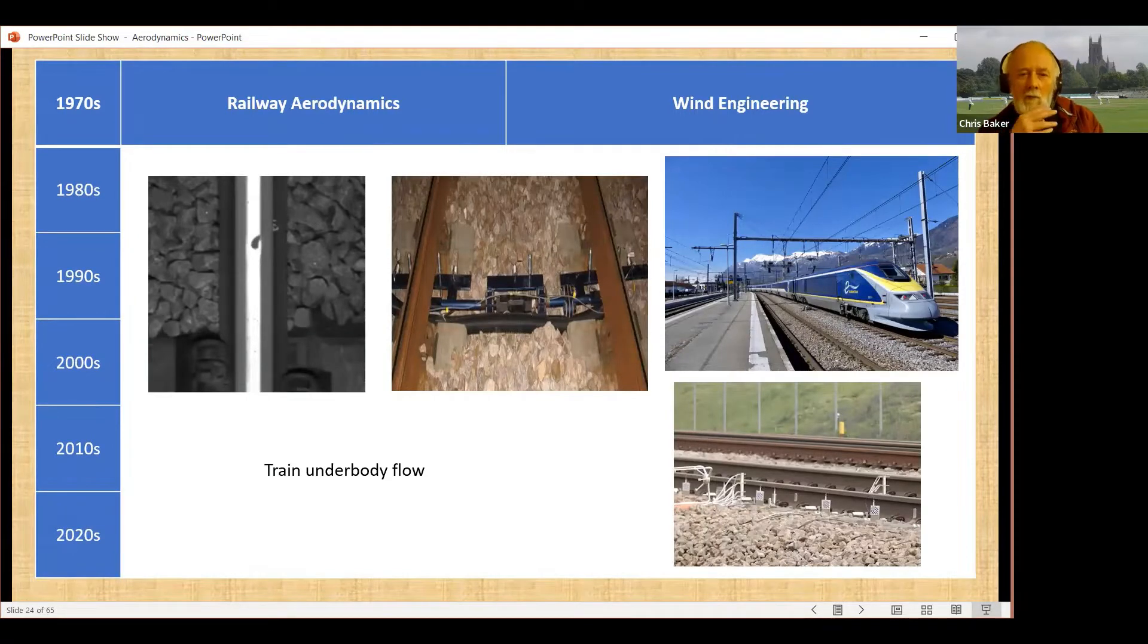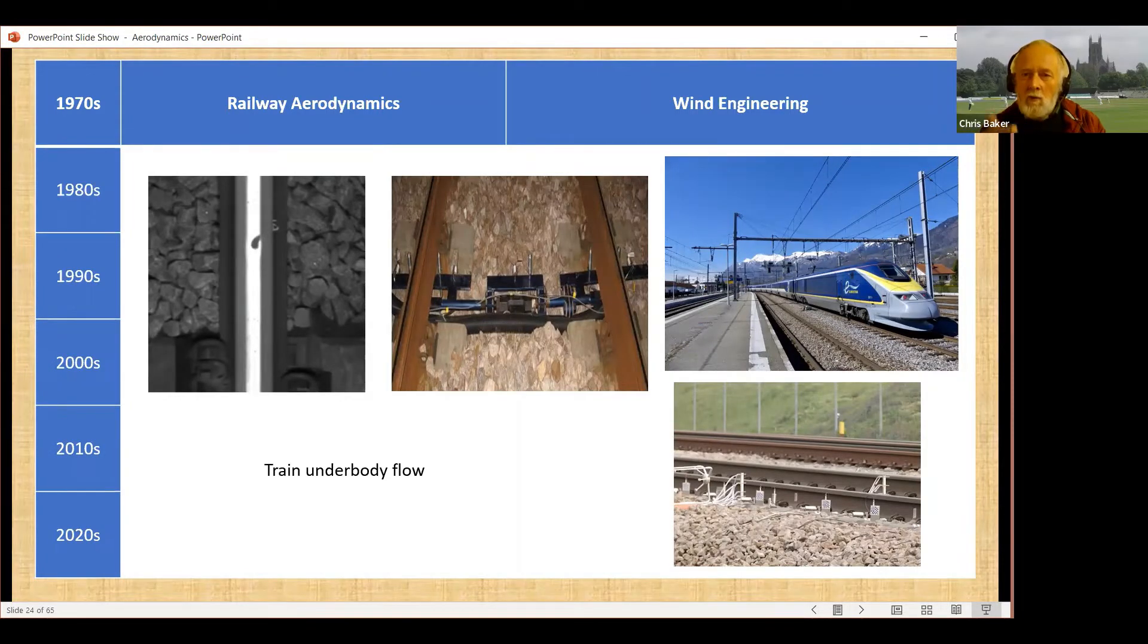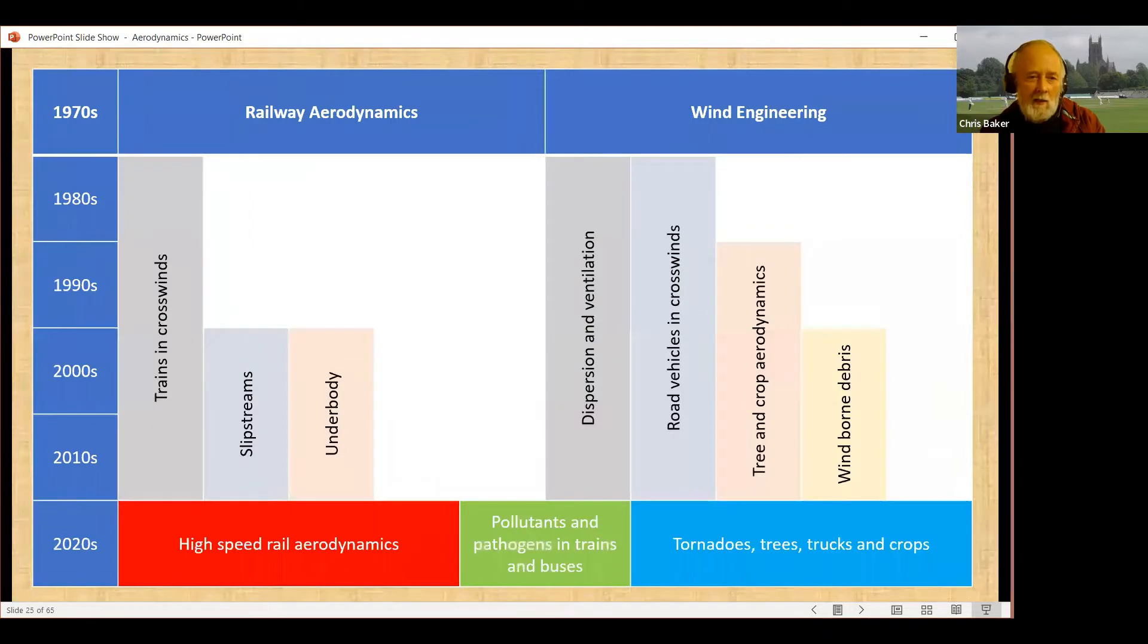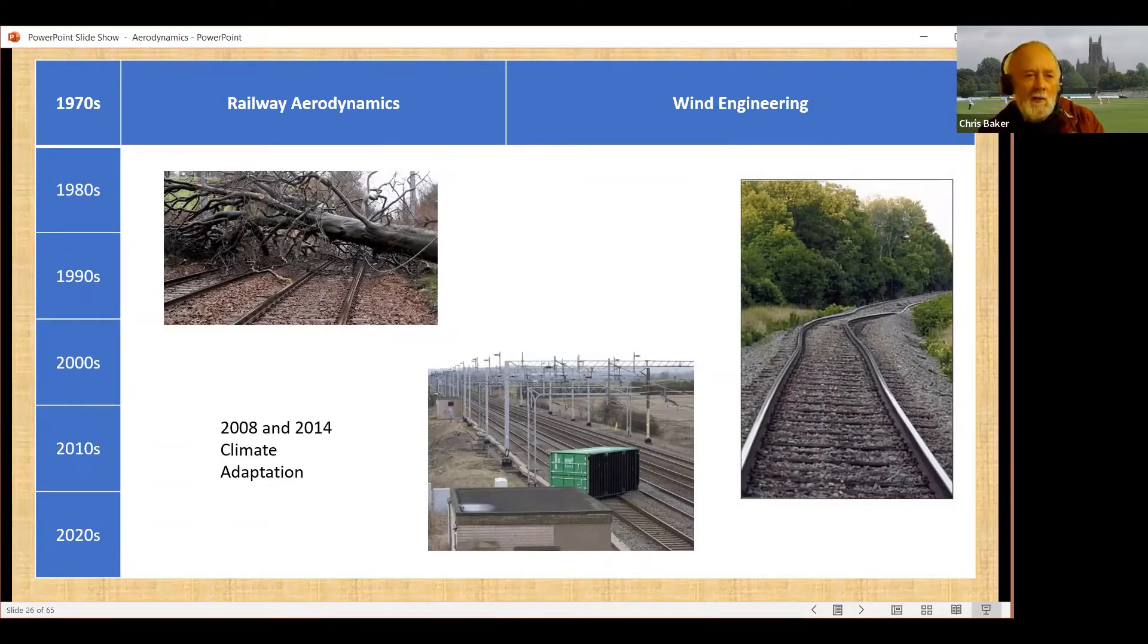I started doing more on railways around then as well. One of the important aerodynamic issues on high-speed trains is that the ballast, the stones in the track, under high-speed trains going at 250 miles an hour or something like that, start to lift off and can do great damage to the trains underneath. So we started making measurements on that. And that, again, is something that's kept me going over the years.